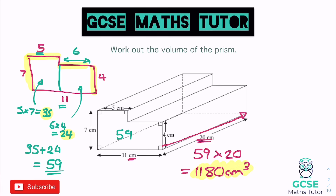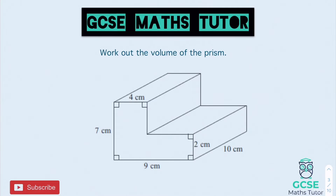That's how we tackle these first questions. You're going to have a go at one very similar — an L-shaped prism. You need to find the area of that L-shaped cross section and then multiply by the depth to get the volume. Pause the video, have a go, and we'll go over the answer in a second.